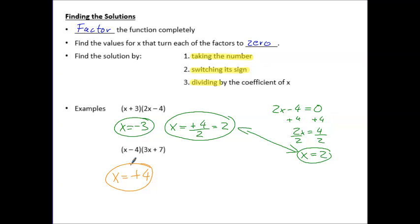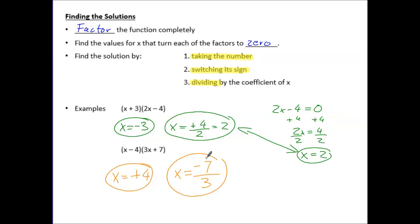The other solution: take the number seven, switch the sign to make it negative, and divide by the coefficient of x which is three. So the solution is x equals negative seven thirds. If you plug that into the second set of parentheses, you'll see that it also turns the factor to zero.